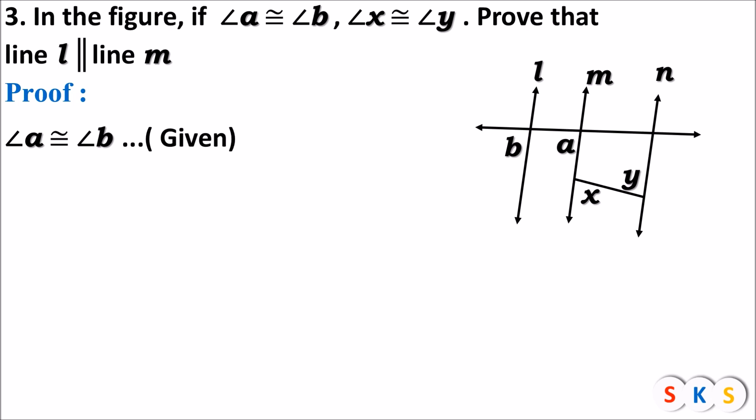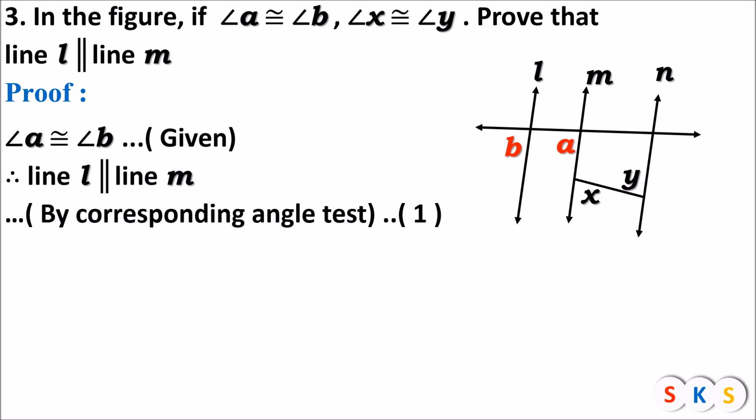Angle a is congruent to angle b — it is given. Looking at the figure, angle a and angle b are corresponding angles. We know that if corresponding angles are congruent then the lines are parallel. So line l and line m are parallel since corresponding angles formed by them are congruent. Therefore, line l is parallel to line m by the corresponding angle test — this is equation number one.